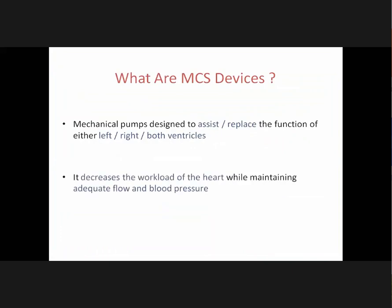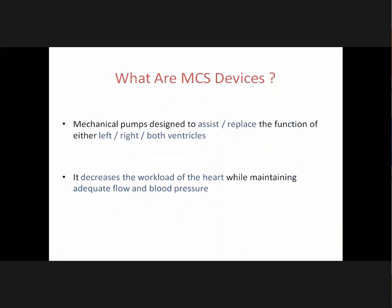Mechanical pump designs are designed to assist or replace the function of either the left, right, or both ventricles — decreasing the workload of the heart while maintaining adequate flow and blood pressure. Guidelines for initiation of mechanical circulatory support: timing is very crucial, and early initiation has a better prognosis. Indications include cardiac index less than 1.8 to 2.2 L/min/m², systolic BP less than 90, wedge pressure greater than 20, RA pressure greater than 18 to 20 mmHg, and evidence of poor tissue perfusion with oliguria, mental status changes, or cool extremities. Contraindications include irreversible renal, hepatic, or respiratory failure, severe sepsis, and significant cognitive decline.